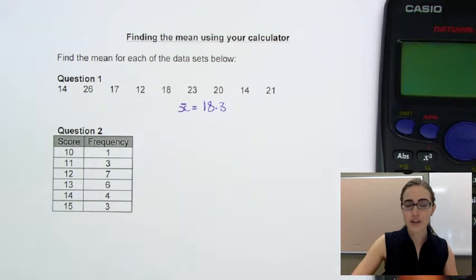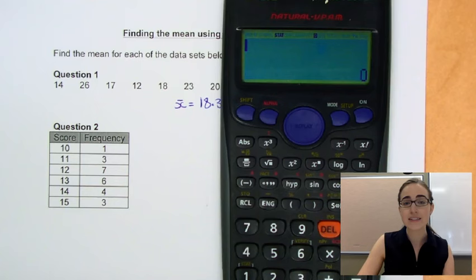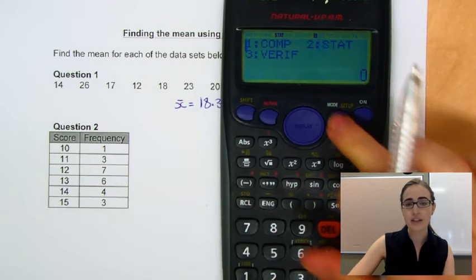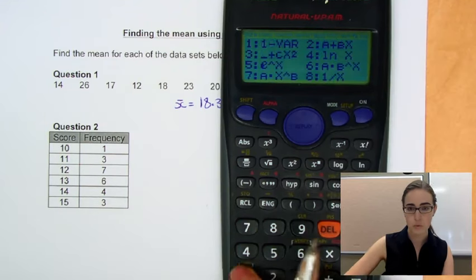Alright, so that's our first data set. Before we enter our second one, we need to clear all that data out of the memory. So the easiest way to do that is just to put it in stats mode again. So we've gone mode 2, 1.